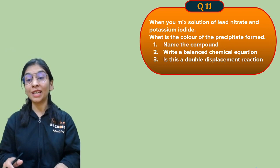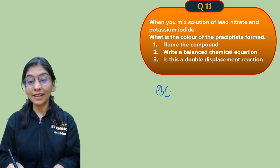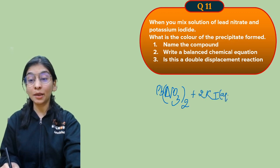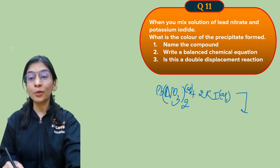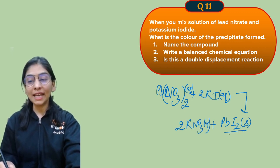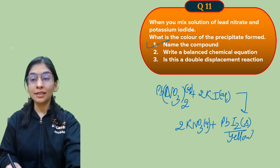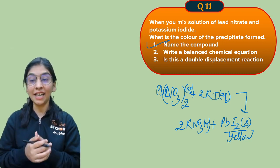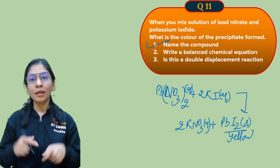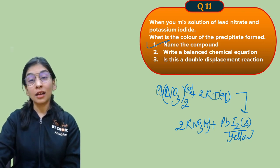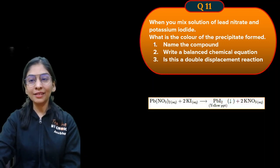Final question: when solutions of lead nitrate and potassium iodide are mixed, what is the color of the precipitate formed? The balanced equation: Pb(NO₃)₂ (aq) + 2KI (aq) → PbI₂ (s) + 2KNO₃ (aq). Lead iodide is a yellow color precipitate. This is a double displacement reaction because precipitation is a type of DD reaction, involving exchange of ions.